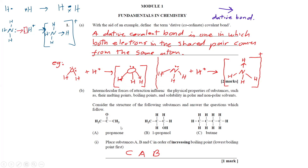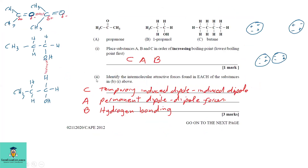We must first identify the type of bonds present to rank them from lowest to highest boiling point. Starting with c, butane has weak intermolecular forces called van der Waals forces (temporary induced dipole-dipole forces). Next is a, propanone, which has permanent dipole-dipole forces. The strongest intermolecular force is in b, propan-1-ol, due to hydrogen bonds.